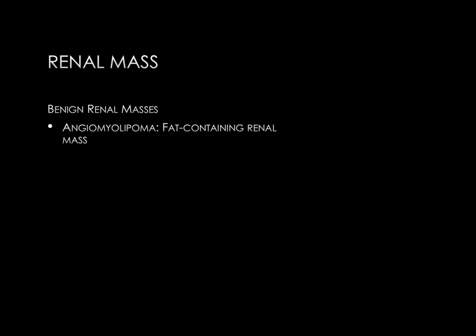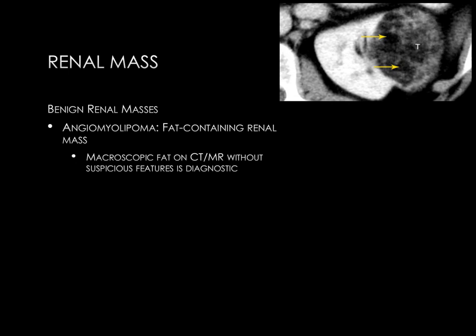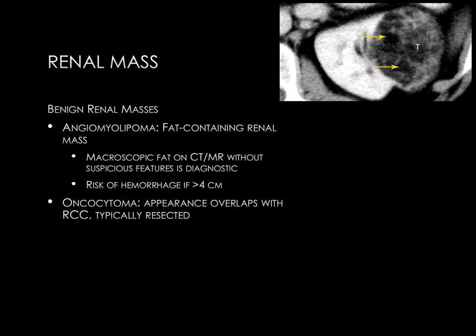Next we'll discuss some benign renal masses with typical imaging features. A renal angiomyolipoma is a fat-containing benign renal mass, diagnosed by identifying a mass with macroscopic fat on CT or MRI with no other suspicious features. The CT image demonstrates an exophytic left renal mass with multiple areas of low density measuring approximately minus 40 Hounsfield units, typical of macroscopic fat — classic for renal angiomyolipoma. While benign, if these lesions are larger than 4 centimeters there is a risk of hemorrhage due to abnormal blood vessels, and these patients should be referred to interventional radiology for embolization.